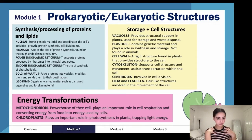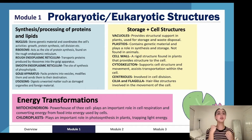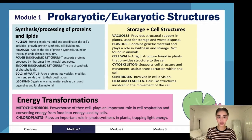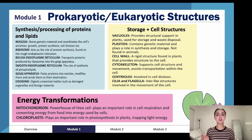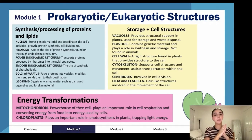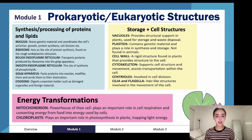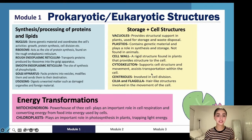Eukaryotic human cells and mammal cells do not have a cell wall — that's a big differentiating mark. They have a cell membrane, not a cell wall. A cell wall is a really rigid, tough structure, whereas the cell membrane is more fluid. The cytoskeleton supports cell structure and movement and assists transportation within the cell.